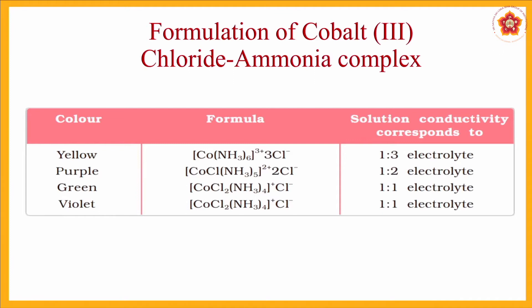Werner formed compounds with cobalt, amine, and chlorine. In the first example (yellow coloration), 3 Cl⁻ ions are precipitated outside. In the second example, 1 Cl is kept inside and 2 Cl are present outside, meaning that one chlorine also acts as a secondary valency donating its lone pair. The ratios observed are 1:3 for the first compound (3 chloride ions dissociate per molecule), 1:2 for the second, and 1:1 for the third.